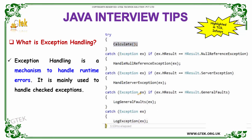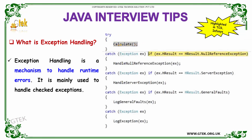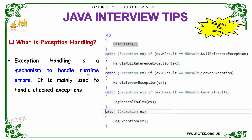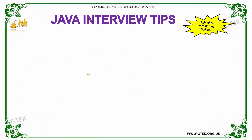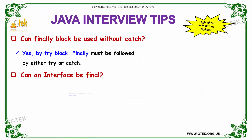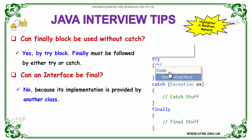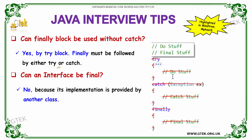If there is an exception, it will be handled using the try block. If an exception occurs in the try block, it will be caught using the catch block. This is known as exception handling, and it is done to detect runtime errors.